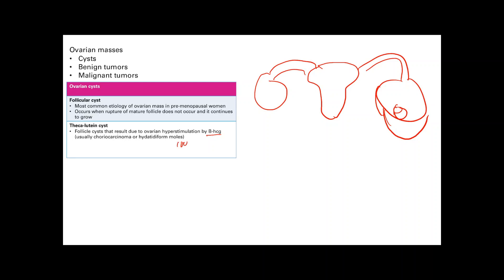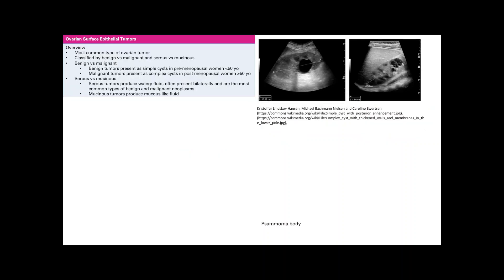The hCG stimulates both ovaries. It's going to cause growth of these follicles and you're going to get theca-lutein cysts.